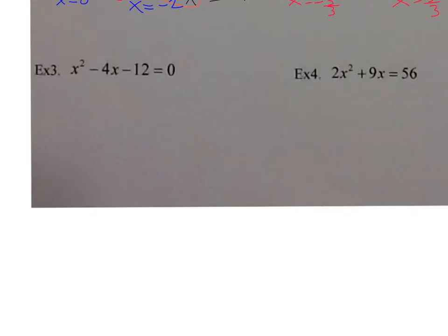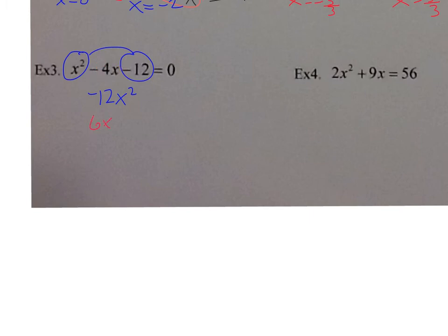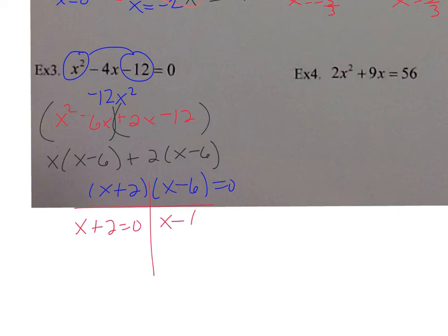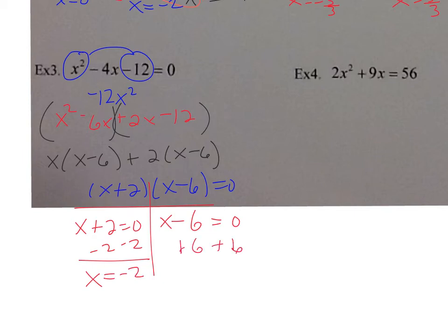Let's try number 3. I have x squared minus 4x minus 12 equals 0. I'm looking for a GCF — I don't see one. It's not difference of two squares. So it must be a trinomial, so I do master product. Multiply the first times the last, I get negative 12x squared. What multiplies to negative 12 and adds to negative 4? That would be negative 6 and positive 2. Factor by grouping: GCF of the first group is x times x minus 6, GCF of the second group is 2 times x minus 6, giving factors x plus 2 and x minus 6 equals 0. T-chart: x plus 2 equals 0 gives x equals negative 2; x minus 6 equals 0 gives x equals 6.